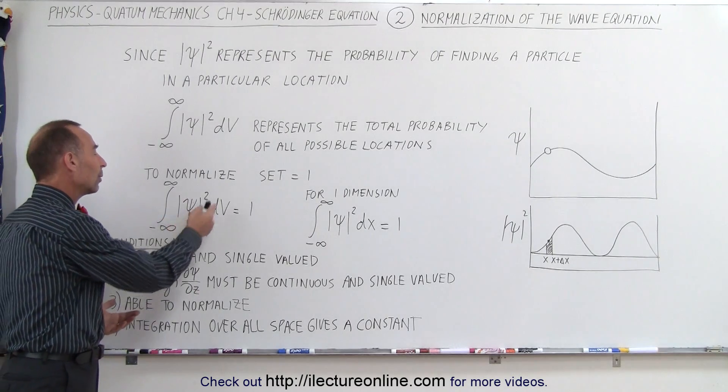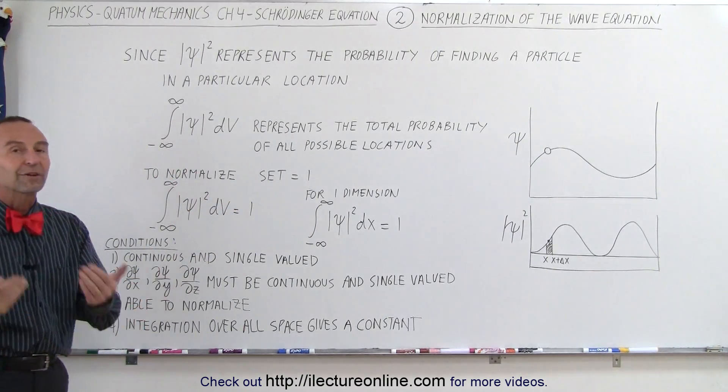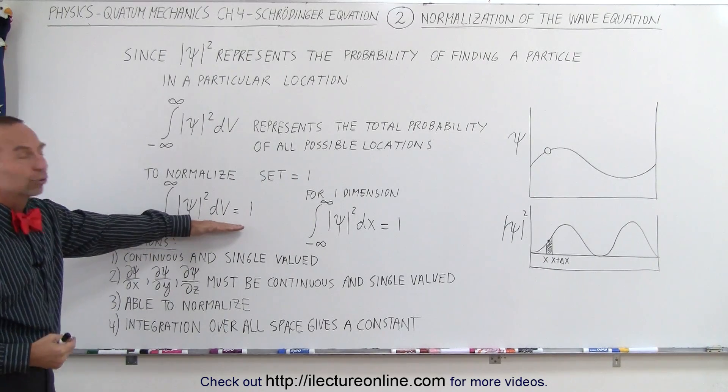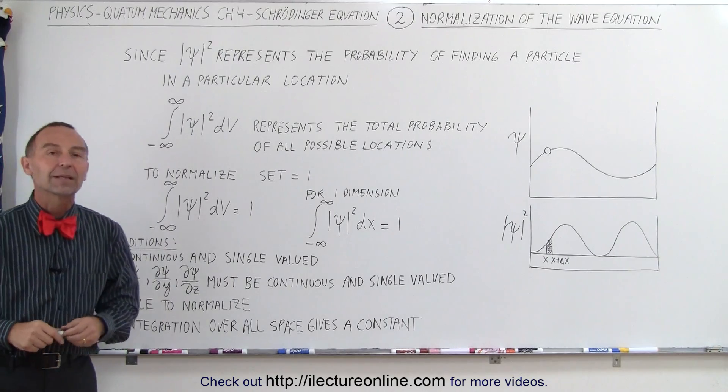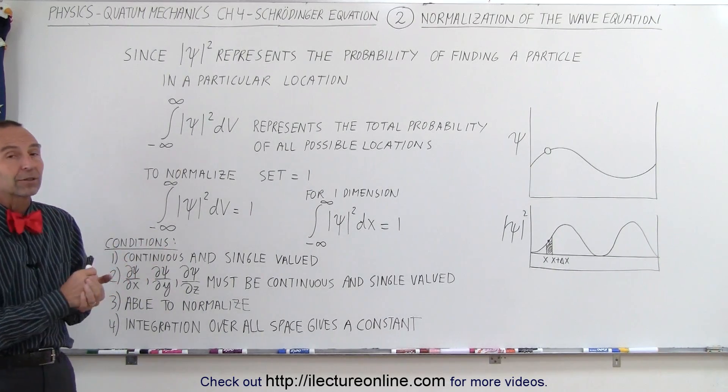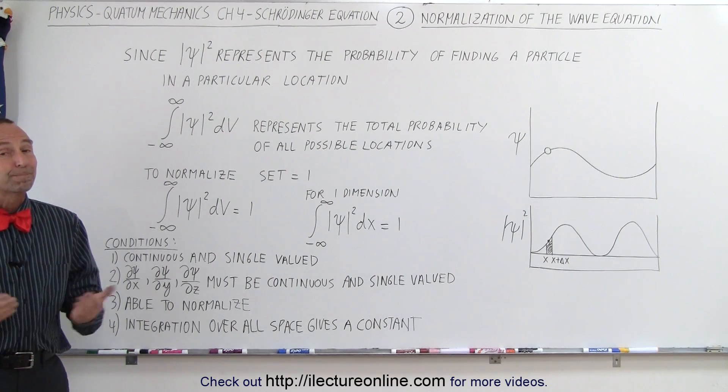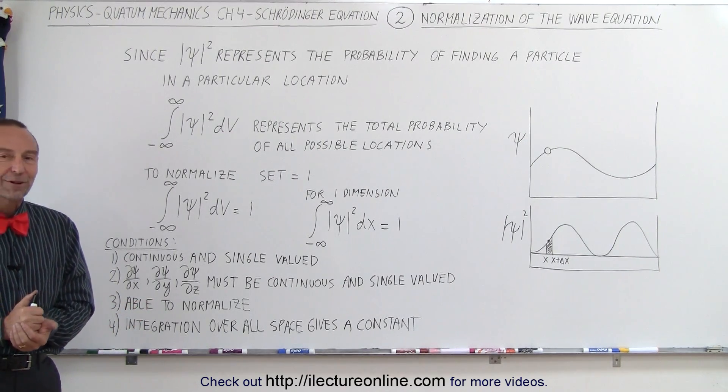Whatever the function is, when we integrate it over all of space, it has to be a finite number. We divide the number by itself, which is called normalization, and then we have what we call a valid probability density function that can represent the probability of finding a particle anywhere in space. That's what we mean by normalization of the wave function.